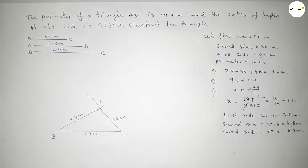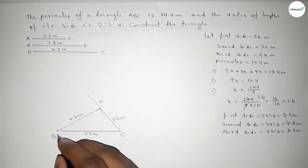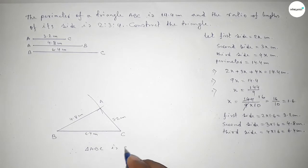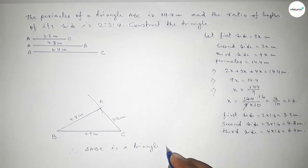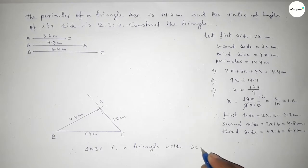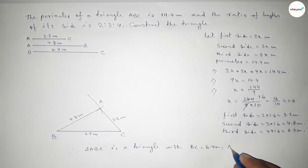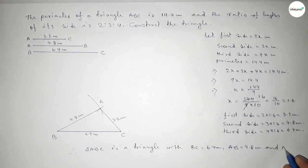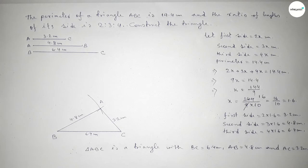Therefore, triangle ABC is the required triangle, with BC = 6.4 centimeters, AB = 4.8 centimeters, and AC = 3.2 centimeters. That's all — thanks for watching. If this video is helpful to you, please share it.